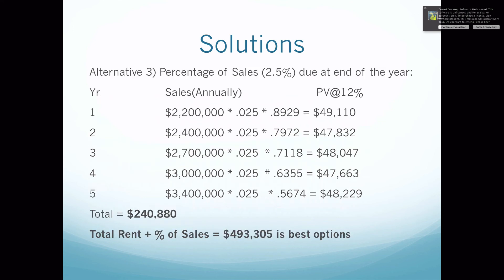Now we calculate the percentage-of-sales component, but we're doing this annually at 2.5% of sales. Because it's annualized we don't divide by 12. For year 1 we take $2.2 million times 0.025 and then discount it by 0.8929, which is the PV factor for 1 year at 12%. Multiplying these out and adding them up, we get $240,888. Adding that to our $252,426 gives us a total of $493,305 for alternative 3.